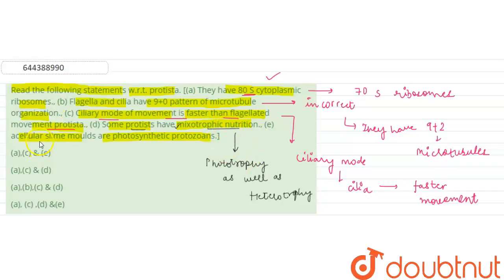The last statement is acellular slime molds are photosynthetic protozoans. This is wrong because Euglena is known as the protozoan which has photosynthetic capability. So that's why this statement is incorrect.